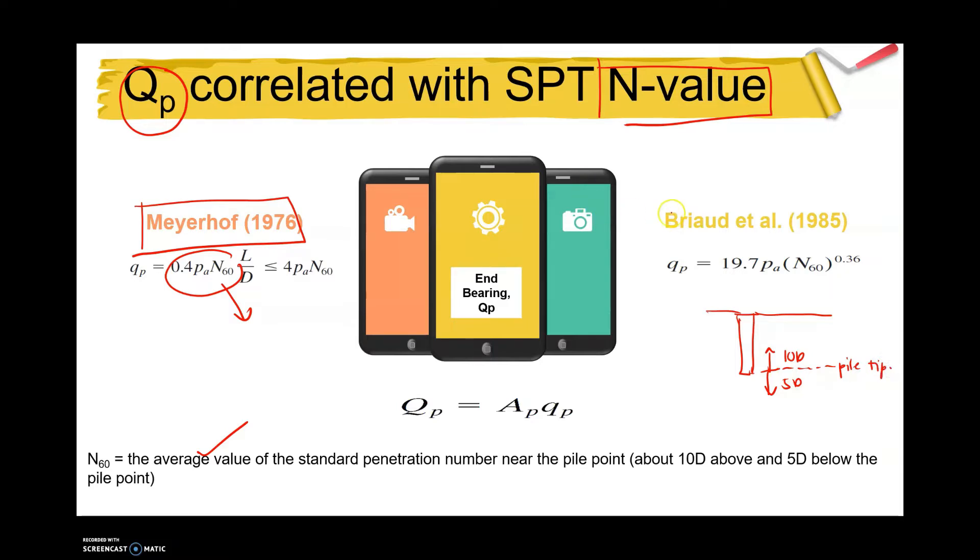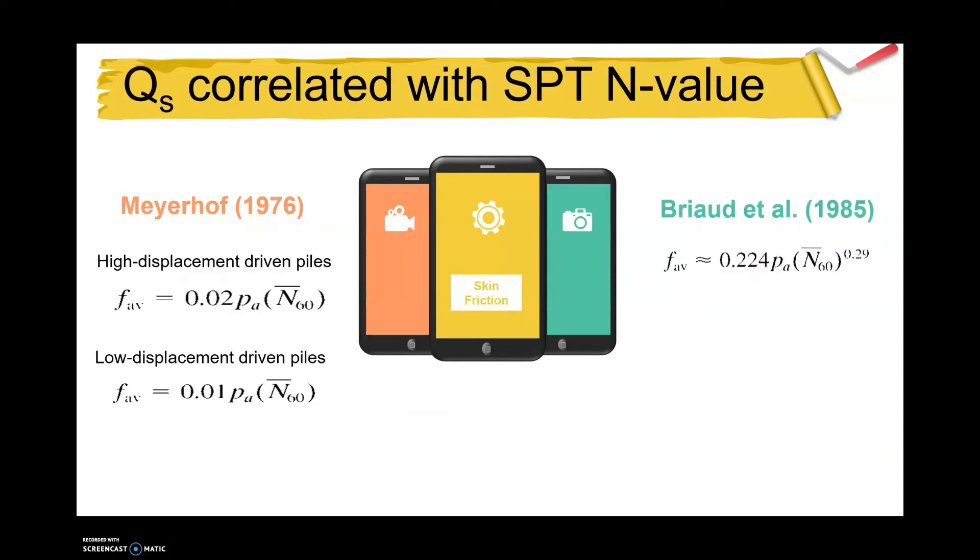By using Briaud et al., you can use the equation 19.7 pa times N60 to the power of 0.36. It's a very simple equation that can calculate the end bearing capacity.